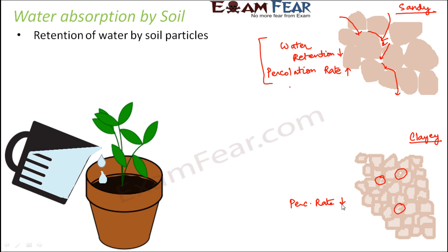So the percolation rate in the case of clayey soil is quite less — in fact, the least of all three soil types. But when you talk about water retention, whatever amount of water reaches these spaces gets locked in and is not allowed to move anywhere. So a good amount of water is actually held and retained by the soil. Therefore, water retention in clayey soil is quite high.